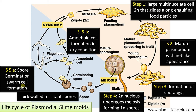Step 6: The swarm cells or amoeboid cells fuse in pairs, behaving just like gametes, forming the zygote. Step 7: Zygote formation — the swarm cells or amoeboid cells that join in pairs undergo plasmogamy and karyogamy, finally forming the zygote with the diploid nucleus again. This diploid zygote then undergoes mitosis to form a multinucleate plasmodium, thus completing the life cycle.